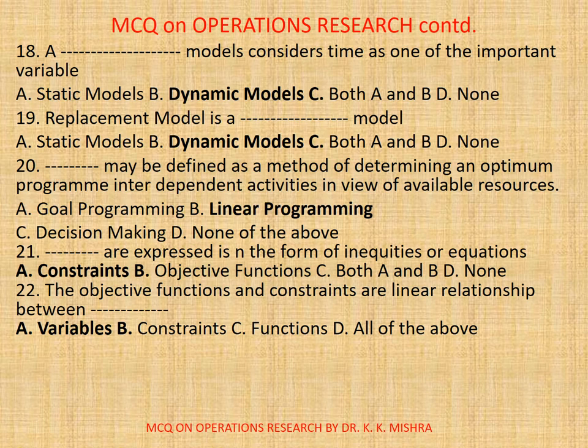Question number 22. The objective functions and constraints are in linear relationship between: A, Variables. B, Constraints. C, Functions. D, All. The correct option is A, Variables.